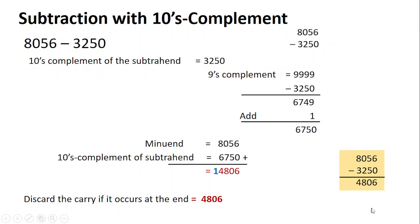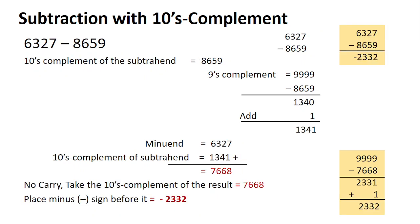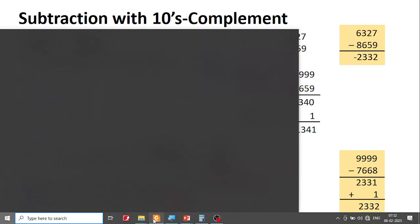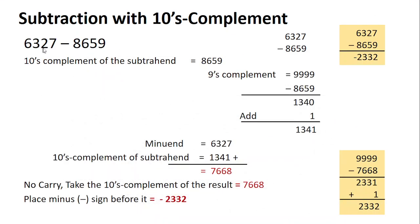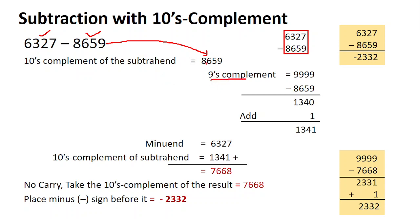Let's go to the next problem from the question bank: 6327 minus 8659. First, ensure that both numbers have the same number of digits — write them one below the other. Once that is done, take the tens complement of the subtrahend. To get the tens complement, first get the nines complement.